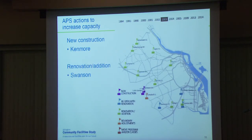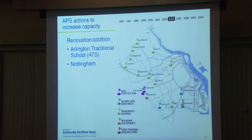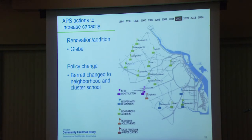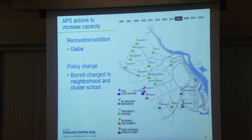In 2003, we completed the new Kenmore and then demolished the old one, and completed a renovation and addition at Swanson Middle School. In 2004, Arlington Traditional School received a renovation and expansion, as did Nottingham. In 2005, there was a renovation and addition completed at Glebe, a policy change to create a neighborhood and cluster school at Barrett, and we moved the CIP to 10 years to align with what the county does.